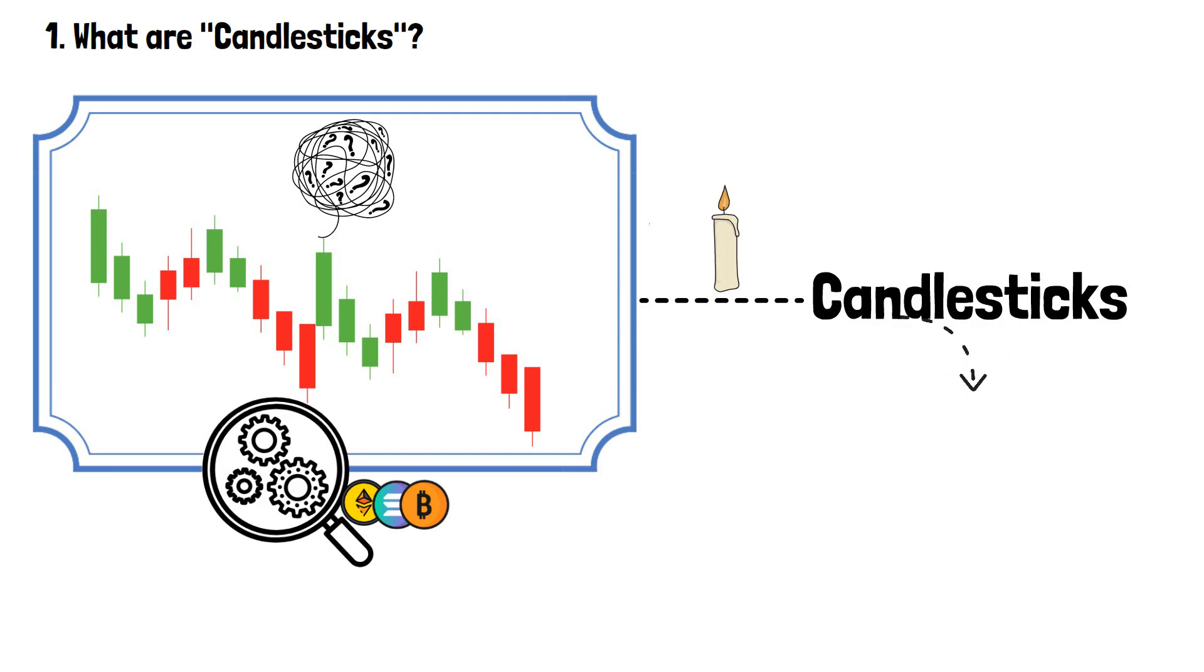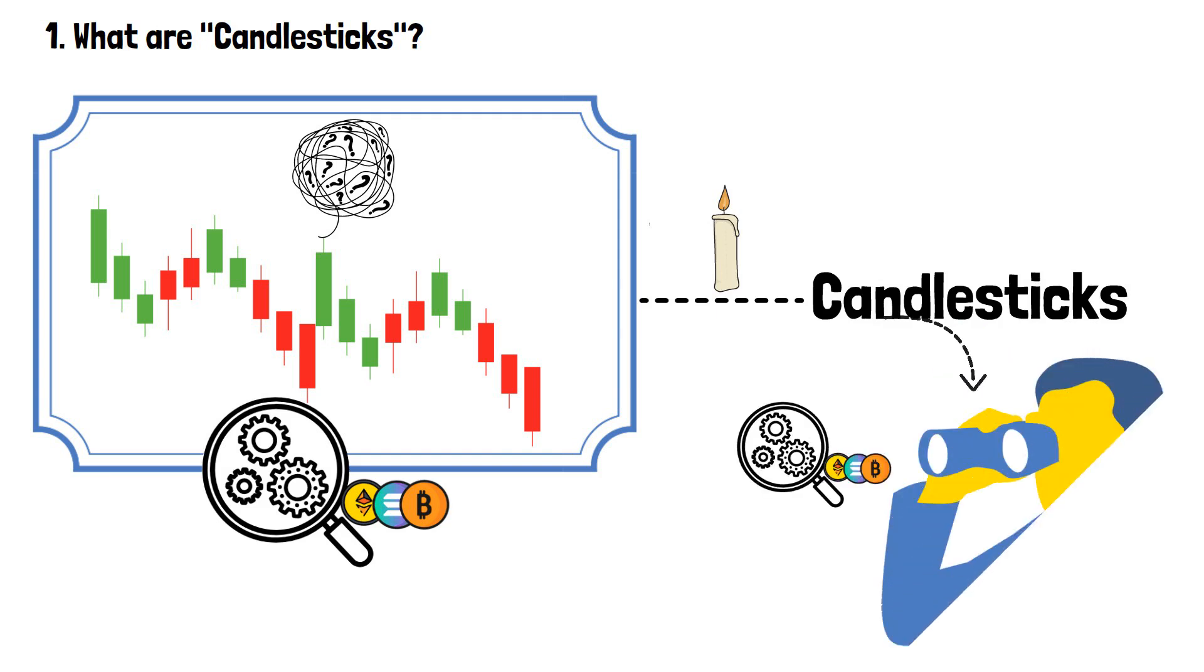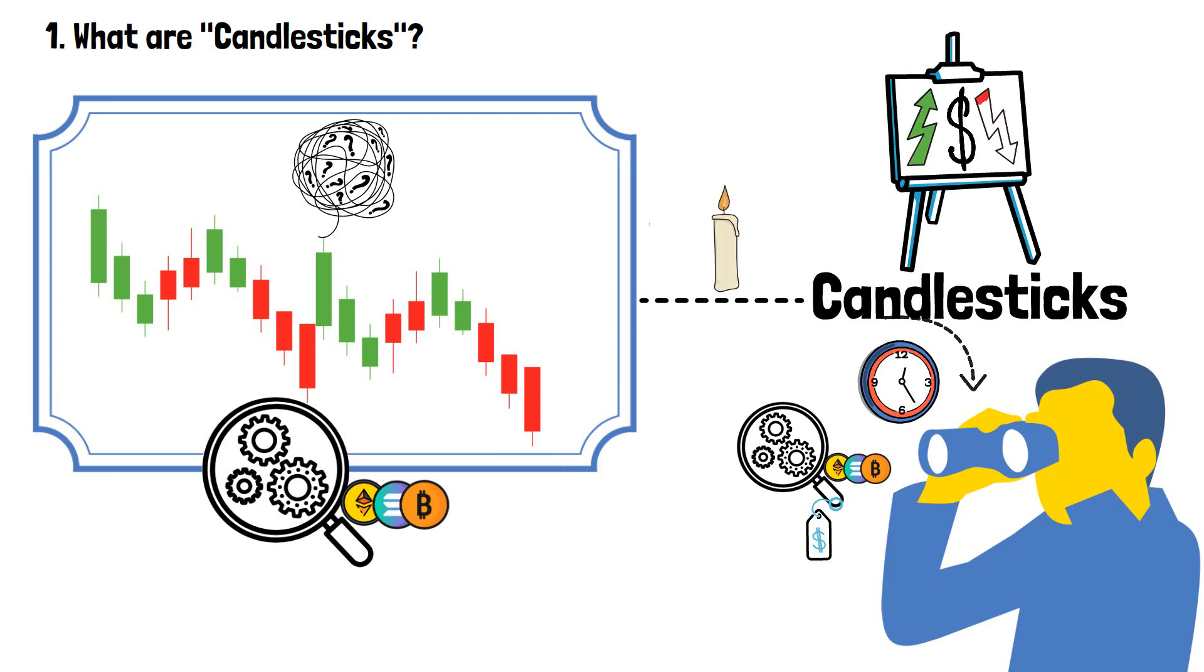Crypto candlesticks are a technical analysis tool that allows traders to observe cryptocurrency price movements over a given period of time. It's a visual representation of these price movements, and it allows traders to immediately tell the ongoing trends and identify if there's a pattern in them.